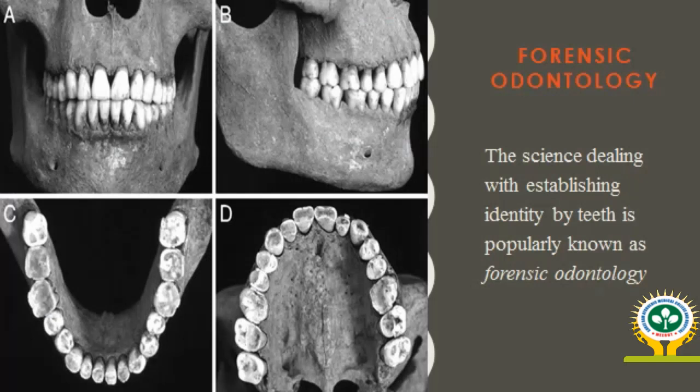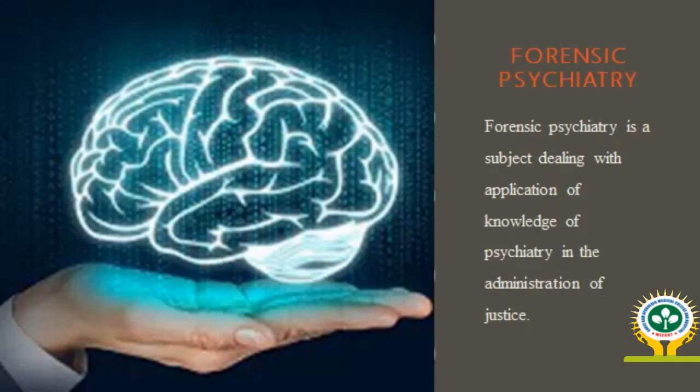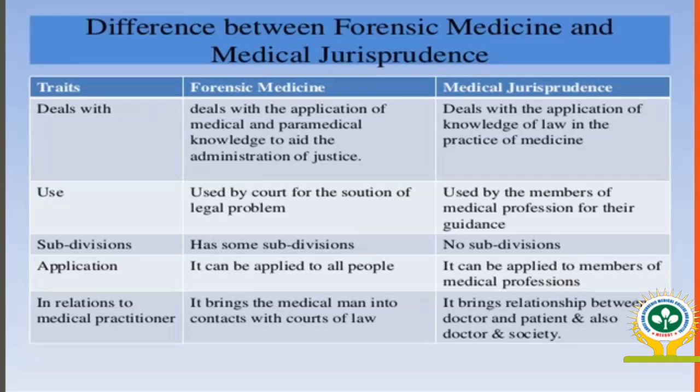The next branch is Forensic Psychiatry. Forensic Psychiatry is a branch of medicine dealing with the application of knowledge of psychiatry in the administration of justice. For example, if a person is in a manic or depressive state and commits a crime, the punishment given will be less compared to that given to a normal person.